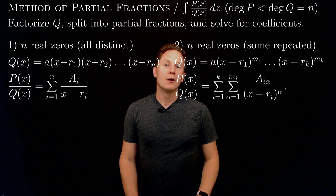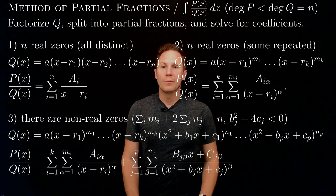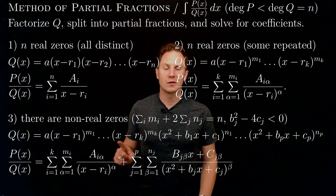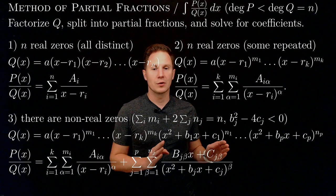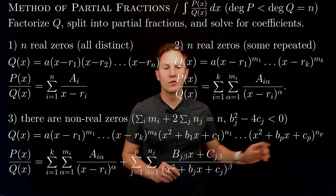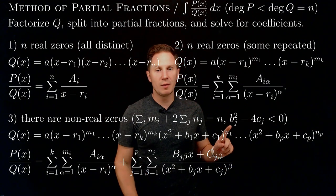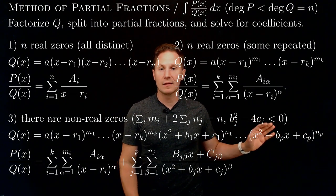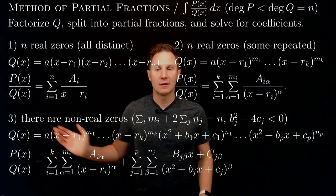The final case is when q, the denominator, has certain zeros that are not real. In that case, q factorizes into a product of linear factors with their multiplicities, but there will also be quadratic factors — again with certain exponents — that have no real zeros. For each of these quadratic polynomials, the discriminant b sub j squared minus 4 times c sub j is negative.